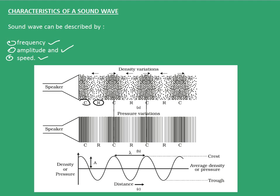Now this density variation can be correlated to the pressure variation in the medium. High density regions correspond to high pressure regions. The region of compression which has a large number of particles, thereby increasing the density of the region, is also a high pressure region — because as the density is more, the pressure is also more.